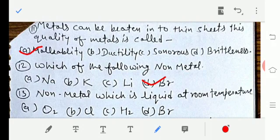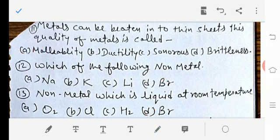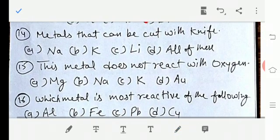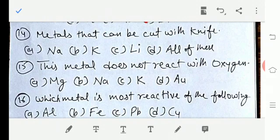Question number 13: Non-metal which is liquid at room temperature. Option A O2, option B Cl, option C H2, option D Br. That would be option number D, Br, which is bromine. Let's move to question number 14: Metals that can be cut with knife. Option A sodium, option B potassium.